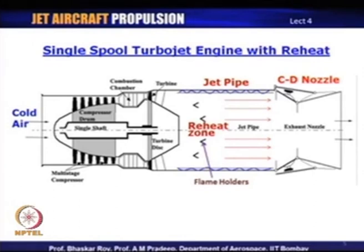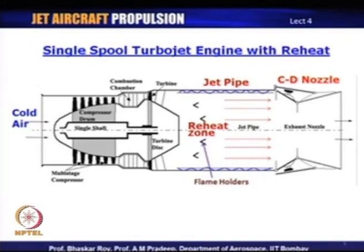Since these are made of metal alloys, there is a certain limit to which the temperatures can be raised at the turbine inlet. So turbine inlet temperature is quite often a limiting factor in turbojet engine design. Once you have a reheat and there is no turbine afterwards, that limit is kind of gone and you can indeed reheat the gas either to the same temperature or to even higher temperature depending on your engine design. Once you do that, that high energy gas is now exhausted through the jet pipe into the exhaust nozzle and you can create a high velocity jet.